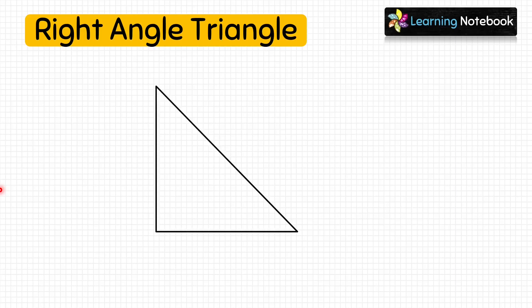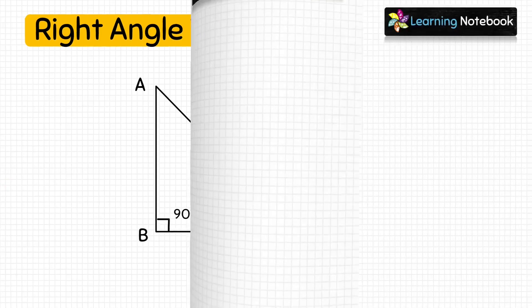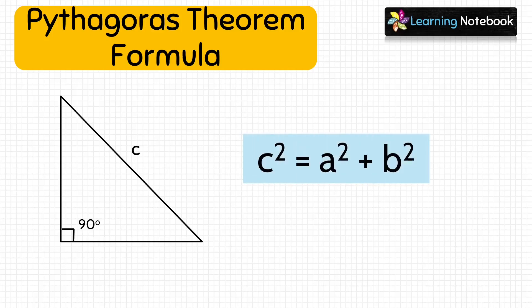Let's consider a triangle ABC right angled at B. In a right angle triangle, the side opposite to angle B is AC, therefore AC is the hypotenuse of triangle ABC. Now according to Pythagoras theorem, c² = a² + b², where c is the hypotenuse and a and b are the other two sides of this triangle.